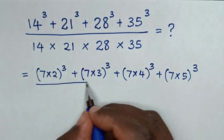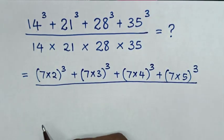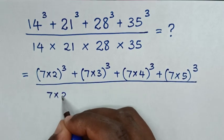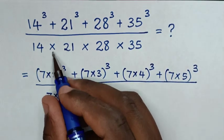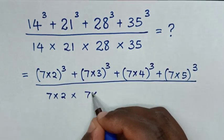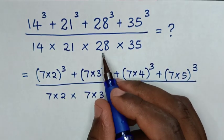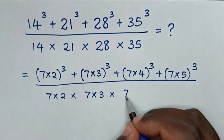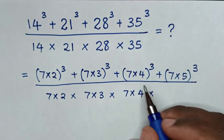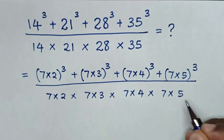Then over the denominator: 14 is 7 times 2, times 21 is 7 times 3, times 28 is 7 times 4, times 35 is 7 times 5.